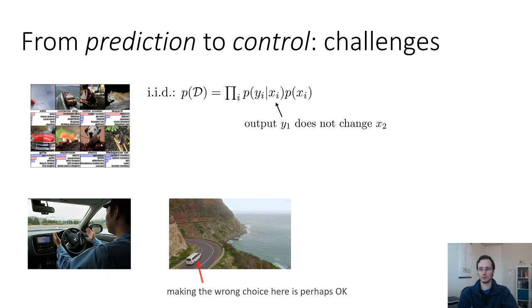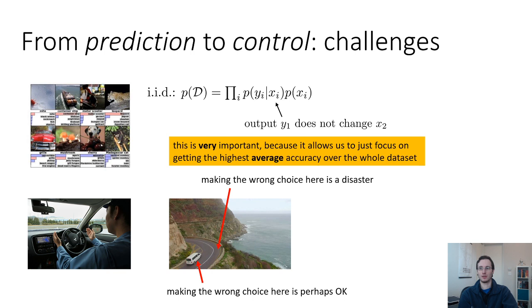So in control, for example, if you're driving a car along a windy mountain road, maybe making the wrong choice over here is perhaps okay, because you still have time to recover, but if you make the wrong choice here, it'll lead to disaster. Furthermore, the choice that you make at the first position may lead you to the second position if you make a mistake, but it might lead you somewhere else if you don't make the mistake. So your inputs are not independent of one another. Your output at time step one will affect your input at time step two. This is very important, because the IID assumption in prediction allows us to focus on just getting the highest average accuracy over the whole data set, whereas the non-IID setting that we have in control means that we have to consider different objectives.